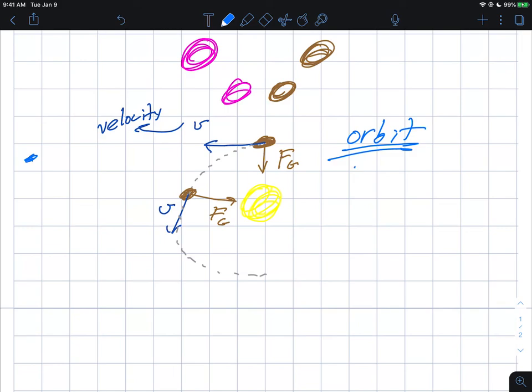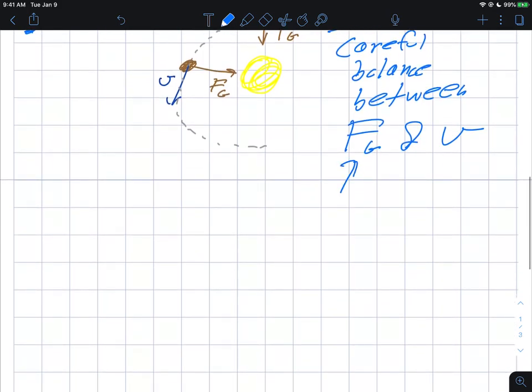But what an orbit is here is a really careful balance between the gravitational force F_g and v, the speed of the object. So of course, this is the gravity here that would like to pull things together, and this here you could call the object's speed.